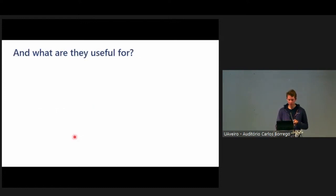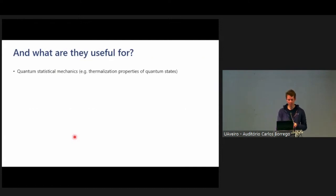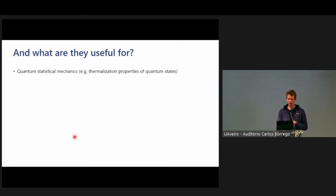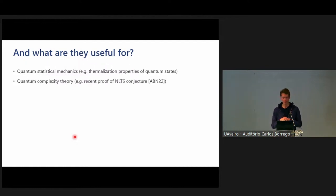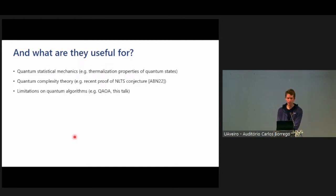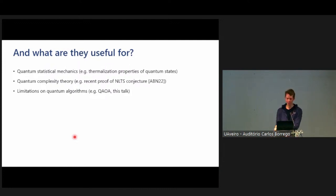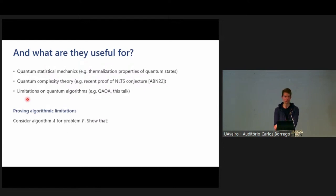Why might you want a concentration bound? This originally came from the physics side of quantum — quantum statistical mechanics — where people use this to prove thermalization of quantum systems. More recently, they've also been very useful in quantum CS. In complexity theory, the recent proof of the NLTS conjecture uses concentration bounds as a very central tool. And as we'll see later, we can also use them to prove limitations on algorithms like the QAOA. To give a concrete idea of how you could use a concentration bound once you've proven one, I want to give the meta-argument for how this algorithmic limitation proof would go — just to see the template — and then we'll implement this for QAOA later.